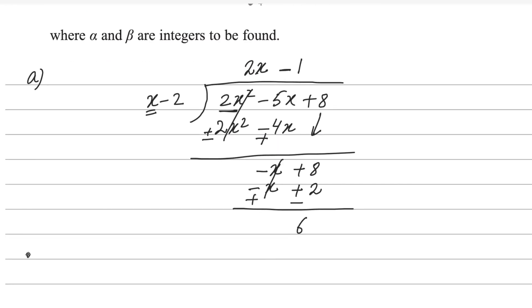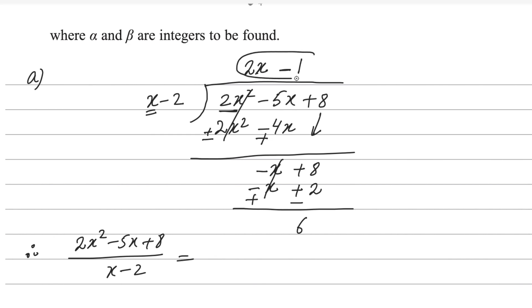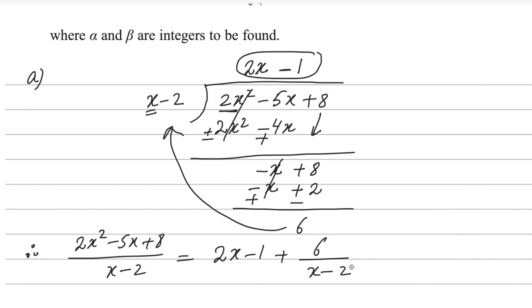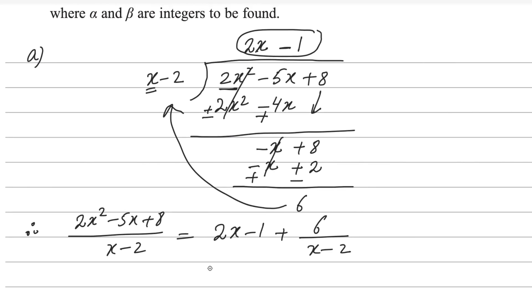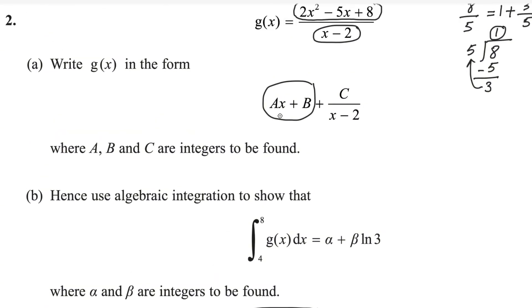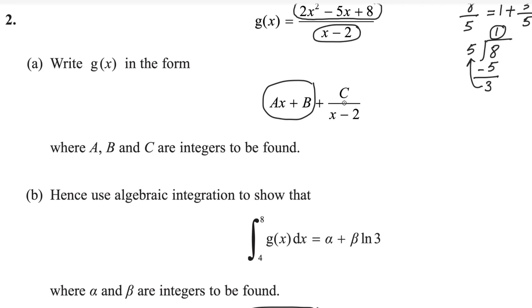Therefore we can write this fraction: 2x squared minus 5x plus 8 divided by x minus 2 can be written as the whole number part 2x minus 1, plus the fraction 6 over x minus 2. If you compare this with the given form ax plus b plus c over x minus 2, this is exactly in that form.